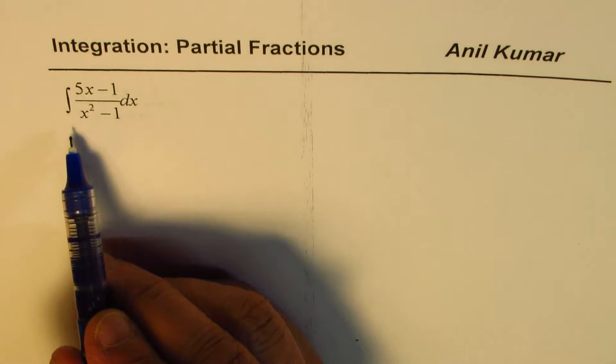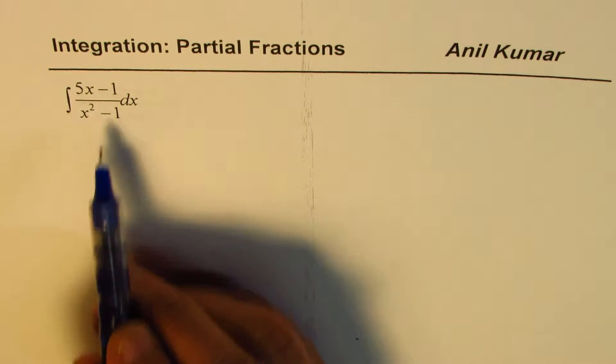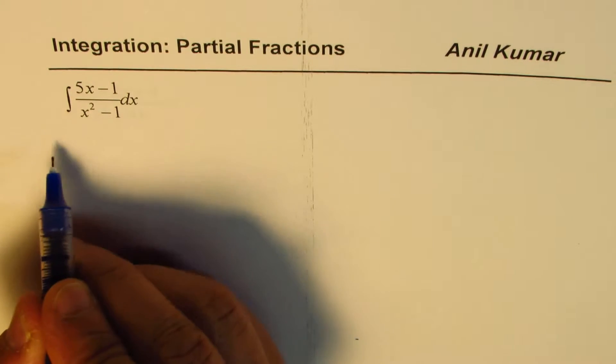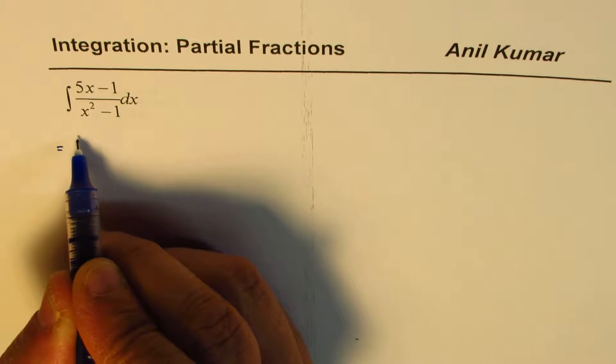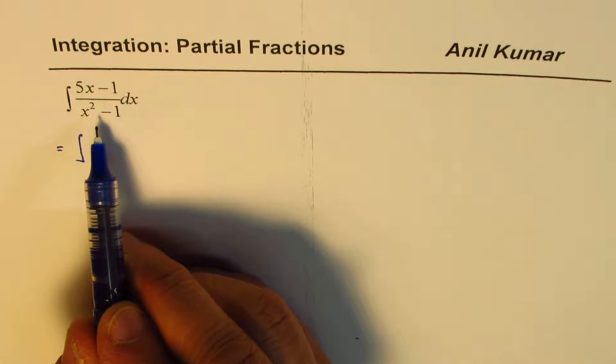So we need to integrate 5x minus 1 divided by x squared minus 1. Now, as you can see, the denominator here could be factored. So first important thing is denominator should be in a position to be factored.